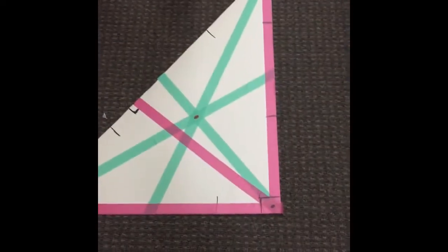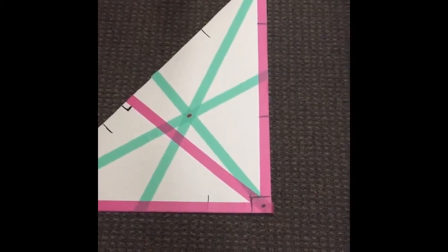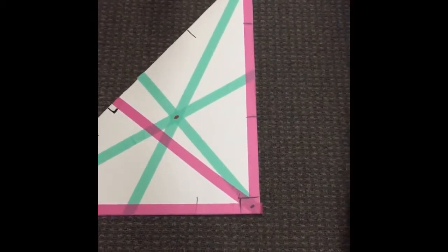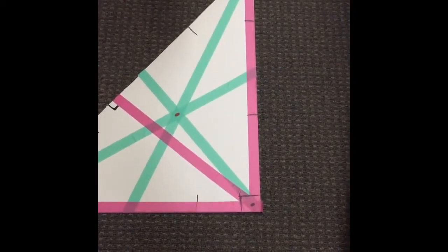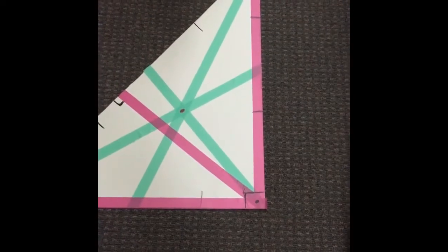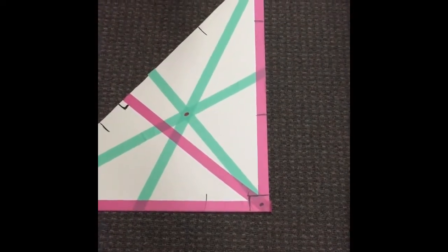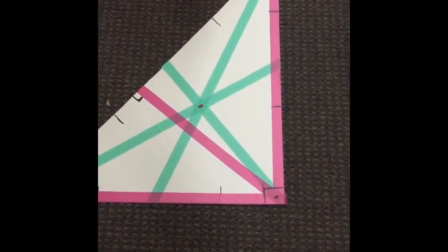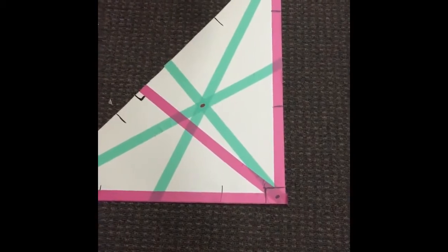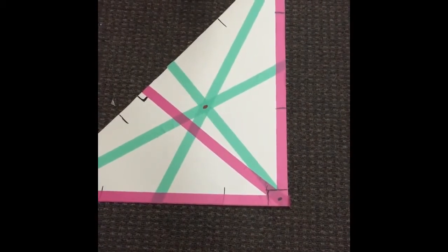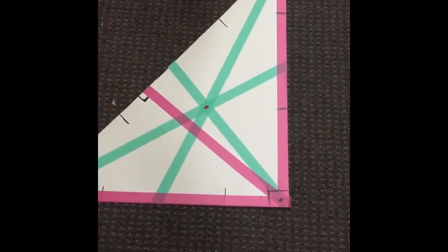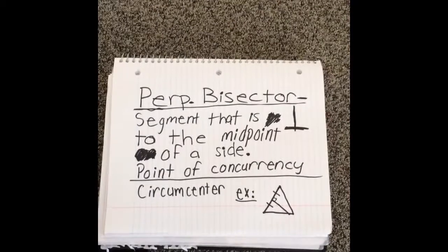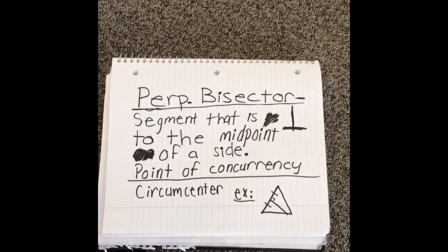Where these three lines meet is the orthocenter. Since this is a right triangle, the orthocenter is directly on the right angle symbol. Had this been an acute triangle, it would be on the inside of the triangle, whereas if it was obtuse, it would be outside of the triangle.